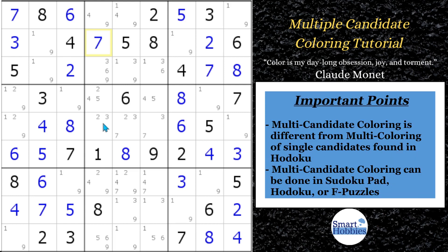I need to make two quick points. First: multiple candidate coloring is not the same as multicoloring of single candidates. If you Google multicoloring, it will show you different methods to use different colors to solve one candidate — that's not what we're doing here. In Hodoku, if you put in multicoloring, it shows you that strategy. Instead, I'm showing you a much more popular strategy used all the time in variants. You'll see Simon Anthony, Mark Goodliff, Bremster — those guys use multiple candidate coloring to solve variant Sudokus and even classic Sudokus.